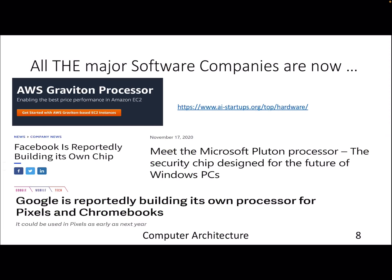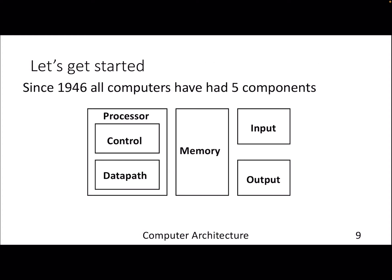A recent trend is that most large software companies are now building their own processors or chips. You can find Amazon, Facebook, Google, and Microsoft doing this, along with 20-plus AI startups in just the last few years. Apart from conventional companies like Intel, AMD, ARM, and IBM, the big software companies are getting into this field. It's an exciting time to study computer architecture.